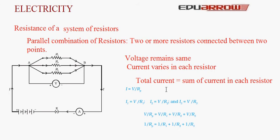By Ohm's law, I1 = V/R1, I2 = V/R2, and I3 = V/R3. Cancelling V on both sides, we get 1/Rp = 1/R1 + 1/R2 + 1/R3. This means the three resistors can be replaced by a single resistor with resistance Rp given by this expression, producing the same effect.